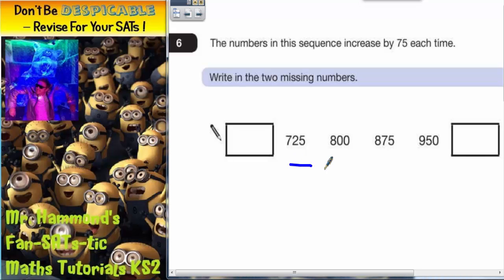So when we go forwards from 725 to 800, we're adding on 75. When we go forwards again, we're adding on 75. That one's easy - 800 add 75 is 875. When we go forwards again, we're adding on 75.